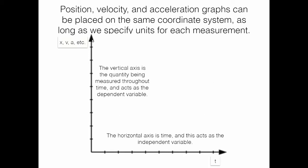Realize that the dimension we are studying — our one-dimensional world — is now the vertical axis, and time is the horizontal axis. We specify that with little symbols: the horizontal axis will have a 't' somewhere, and on the vertical axis we'll have an x, v, or a, or all three.